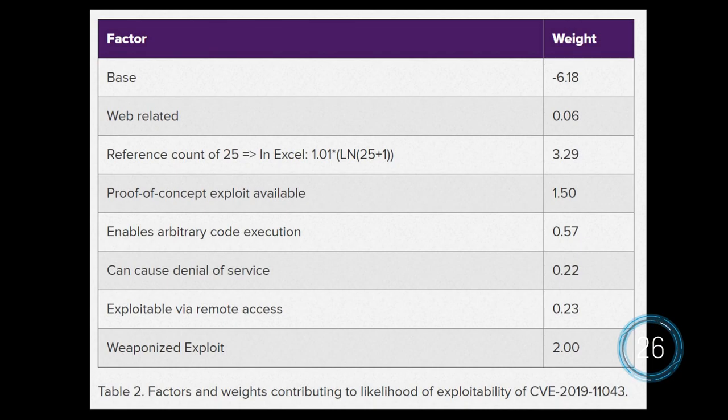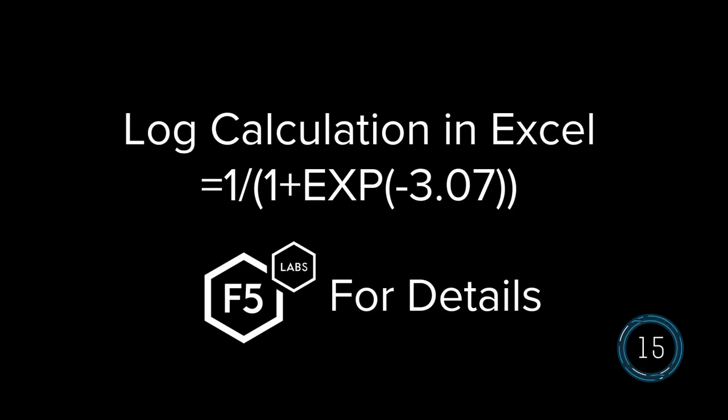This model works by tallying up all these weights and adding them to a base factor number. You can use that number with a natural log calculation to find the probability. I know it sounds complicated, but you can plug all these factors and weights into a simple spreadsheet.